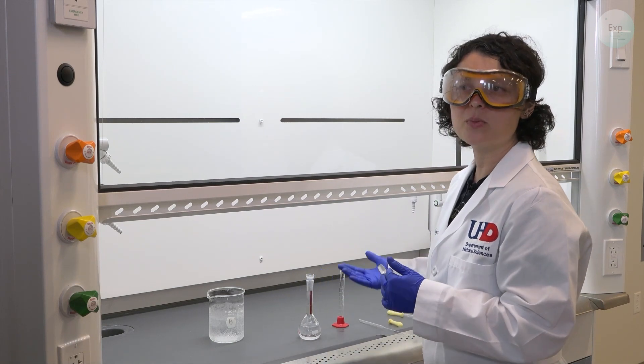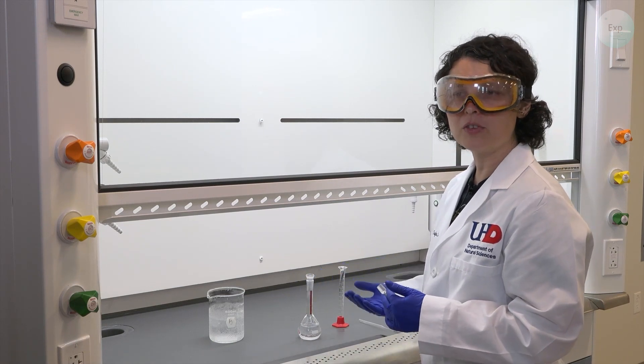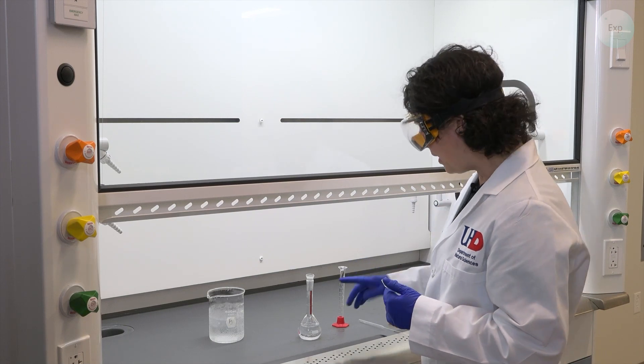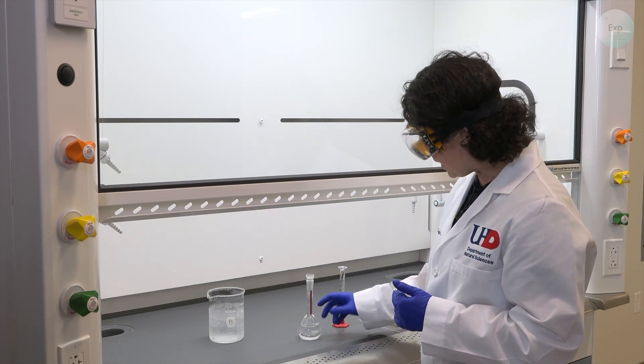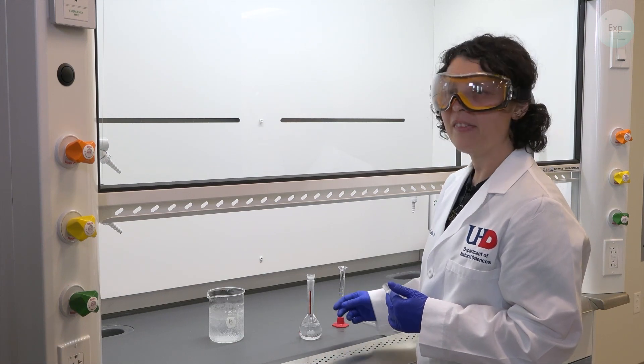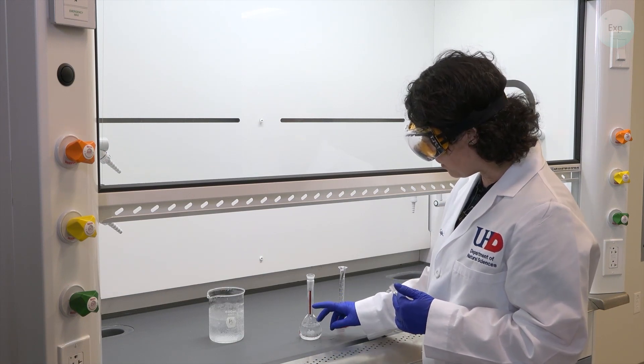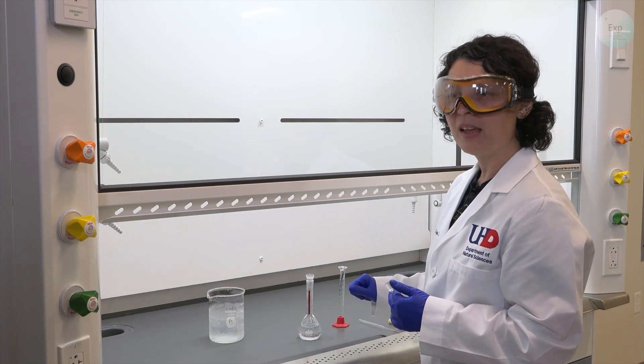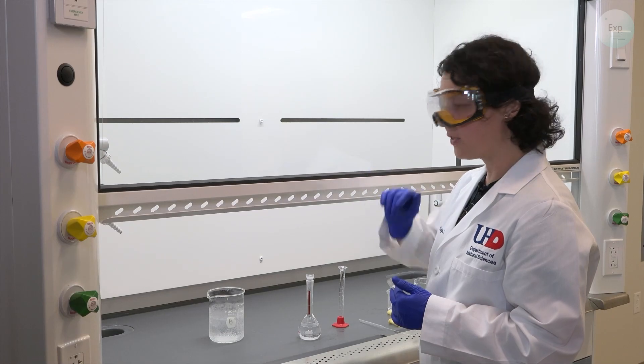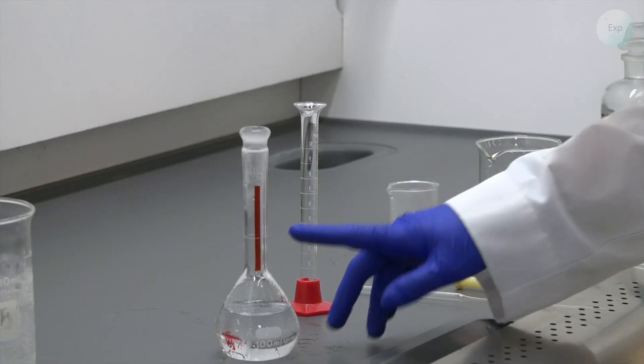So the solute is where it needs to be. The final volume of the solution isn't yet known. The only volume marker on a volumetric flask is this ring towards the middle of the neck. And that says when our volume hits that mark, it is exactly 100 milliliters. And we always want to get the meniscus of the solution to be at the marking.